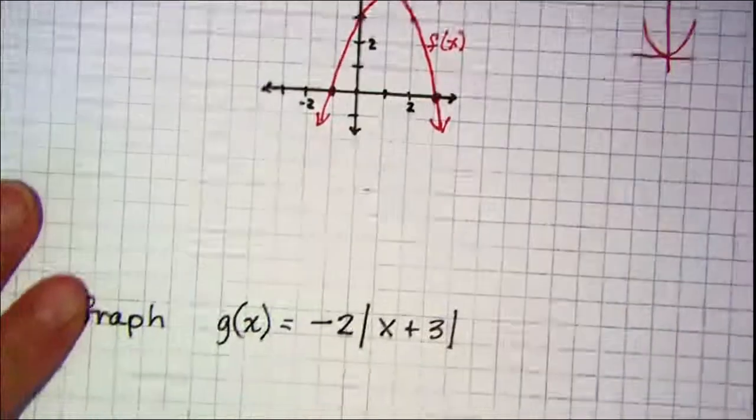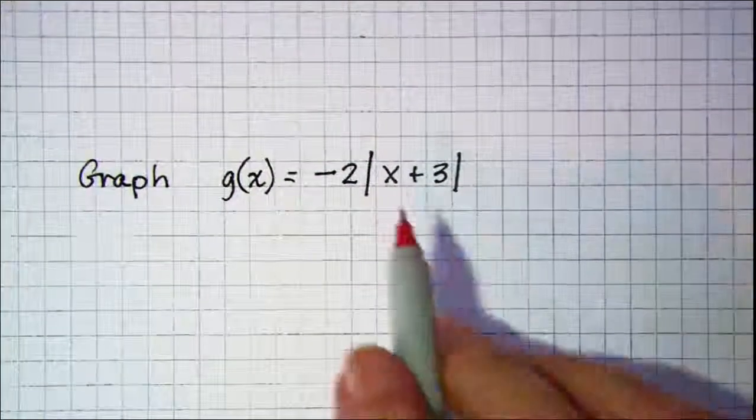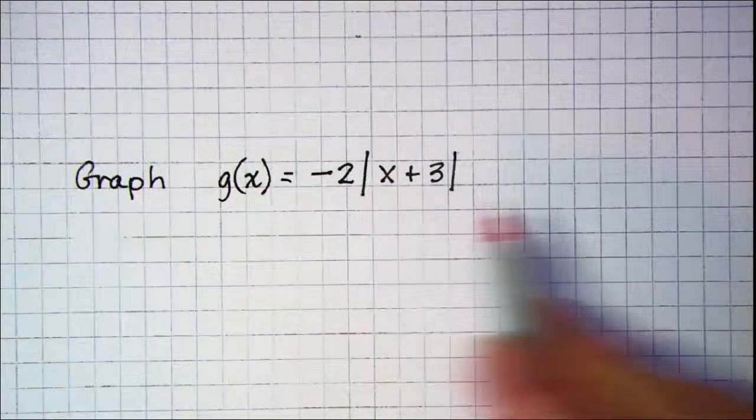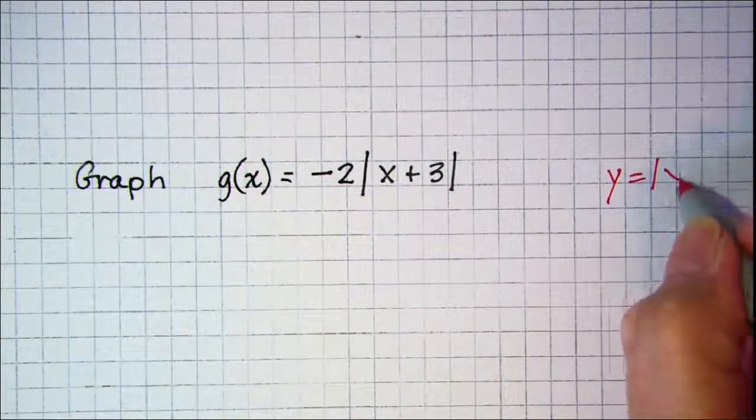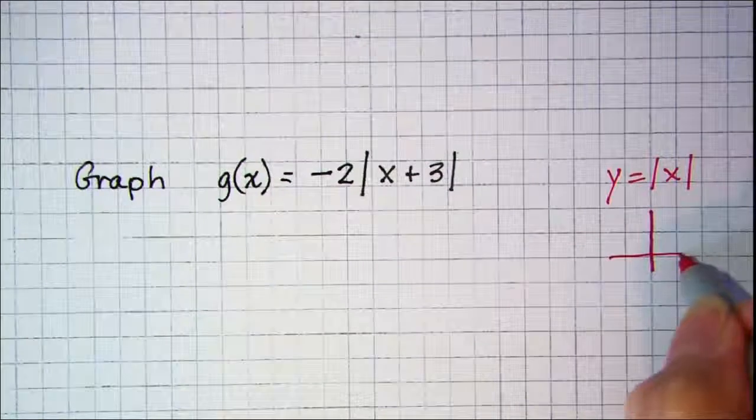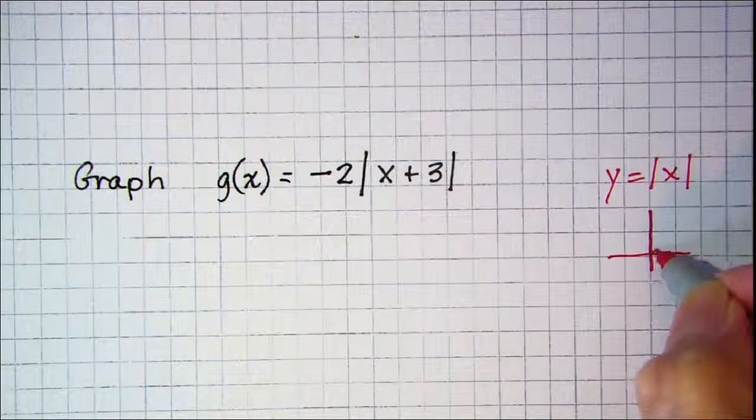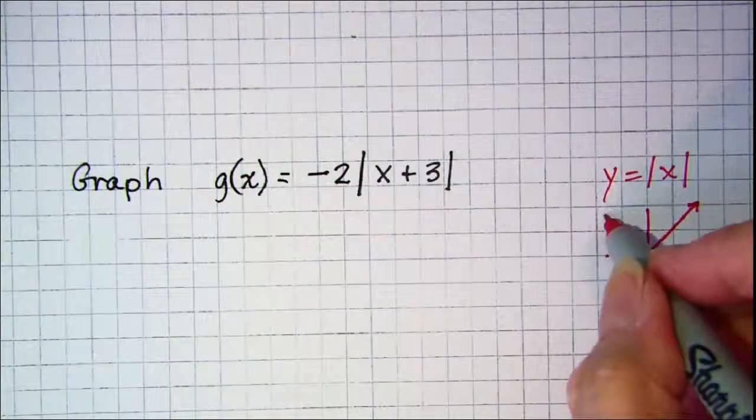Let's do another one. On this one we see that we have an absolute value function, so the basic graph is y equals absolute value of x, which we know is a V with a slope of positive 1 and negative 1 on the left side.